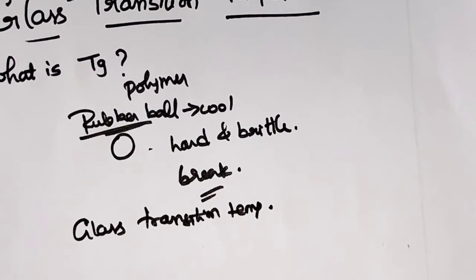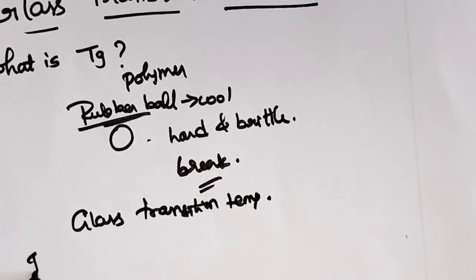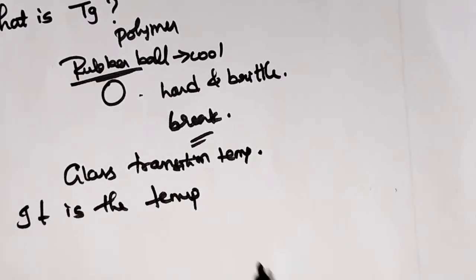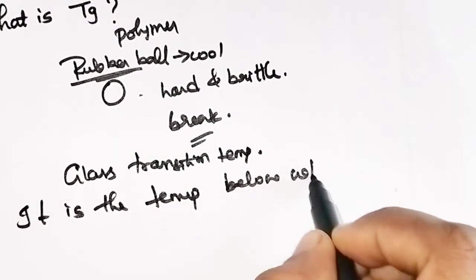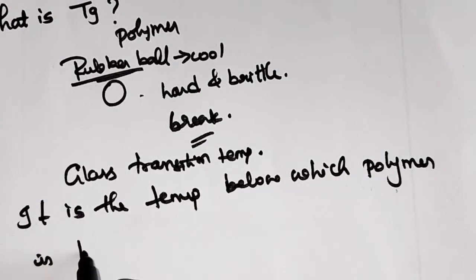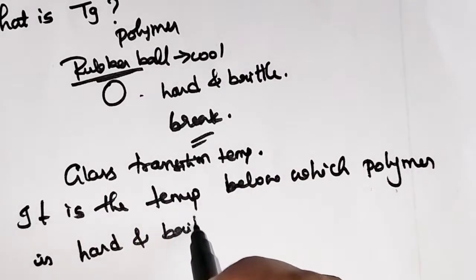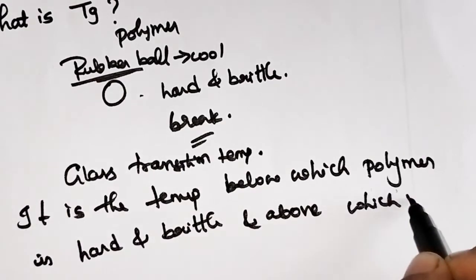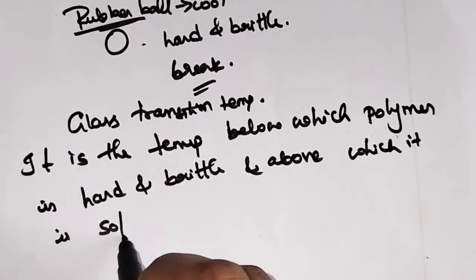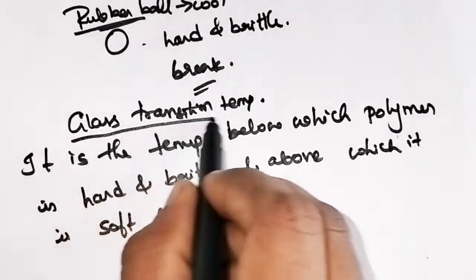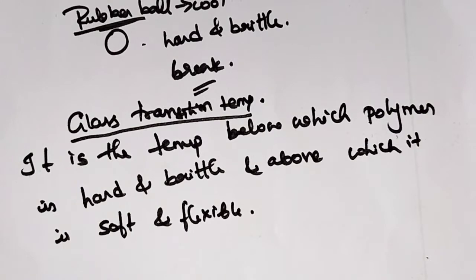So what is the glass transition temperature? It is the temperature below which the polymer is hard and brittle, and above which it is soft and flexible. That temperature we call the glass transition temperature — this is the definition.